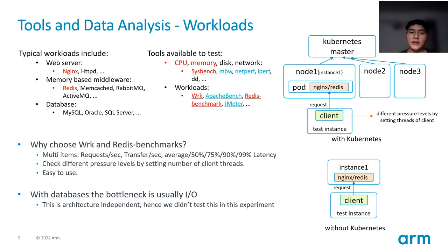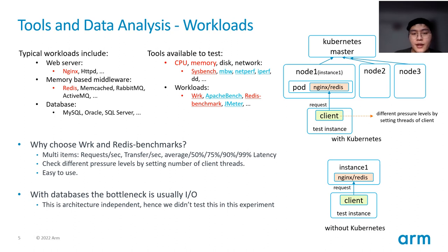We divide the test into two parts. First is workload. Some typical workloads are listed here, such as web server, middleware, and database. We choose nginx and Redis as workloads. The bottleneck of database use is usually I/O, so we didn't test any database.